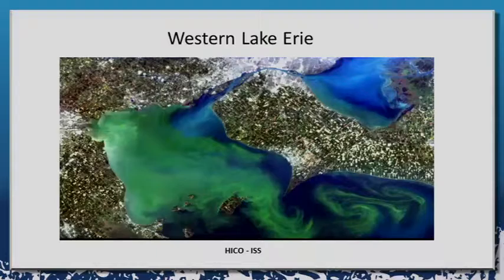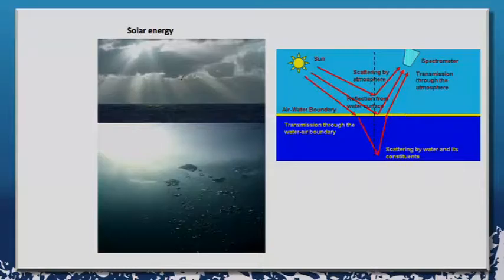This is very high-resolution data collected with an imager called HICO — the Hyperspectral Imager of the Coastal Ocean — mounted on the International Space Station. This shows our work in Western Lake Erie, where you can see incredible detail of a very strong toxic bloom of cyanobacteria called Microcystis.